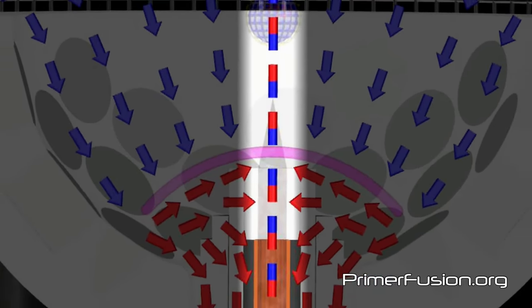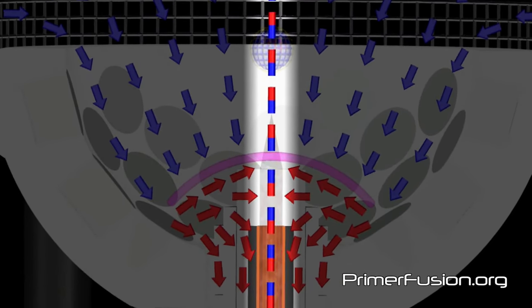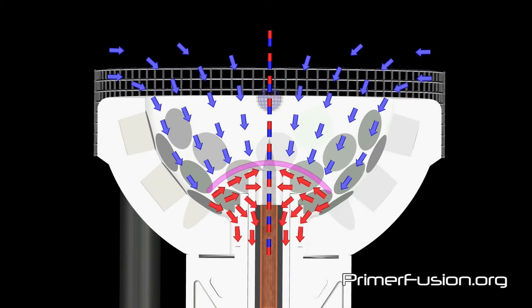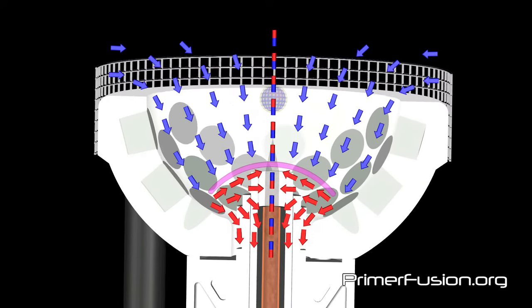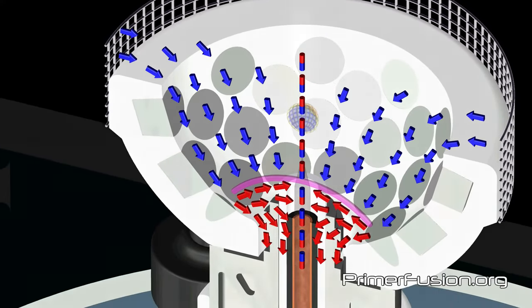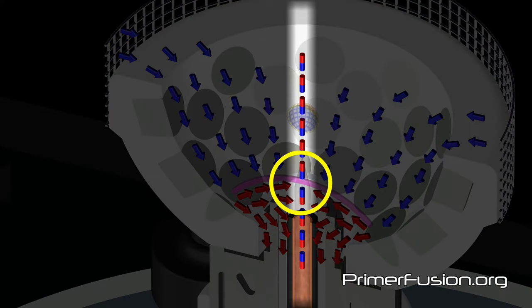This is where the ejection jet begins, and any magnetic matter is accelerated rapidly up through the magnetic focal point. Once again, notice the magnetic polarity flip right at the top of the confinement dome.